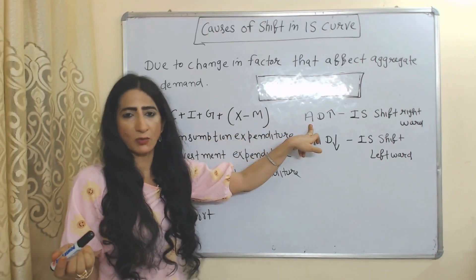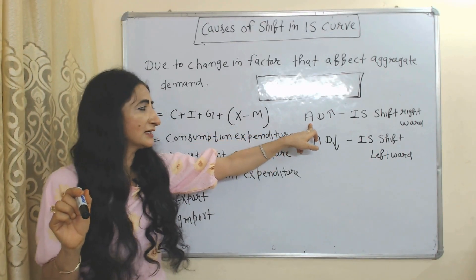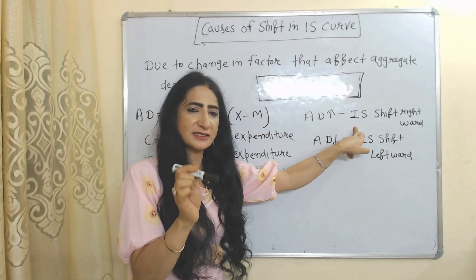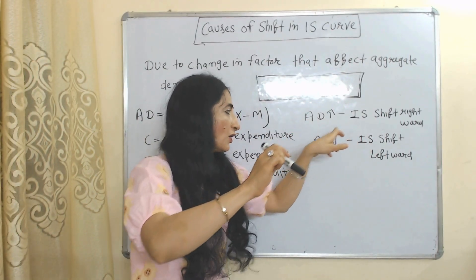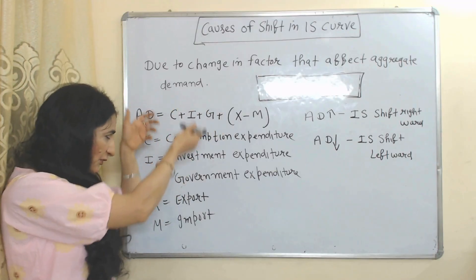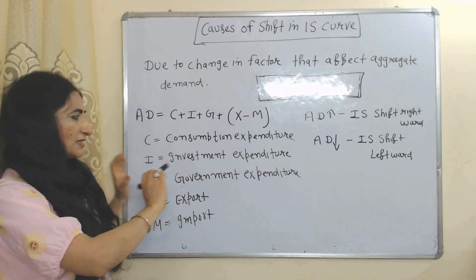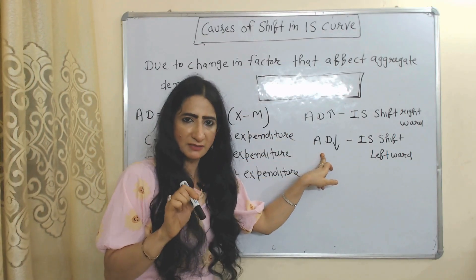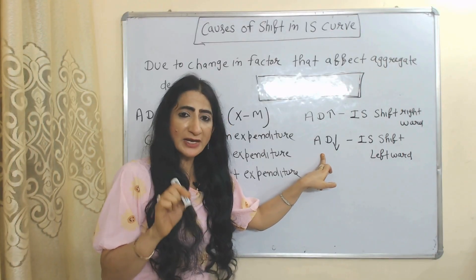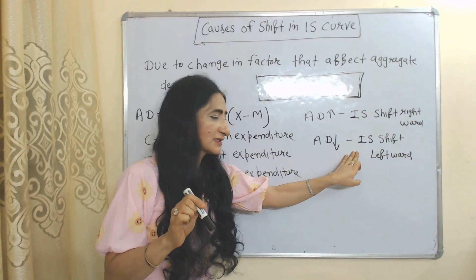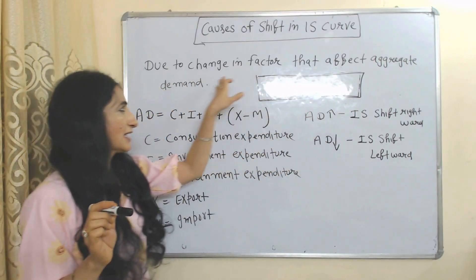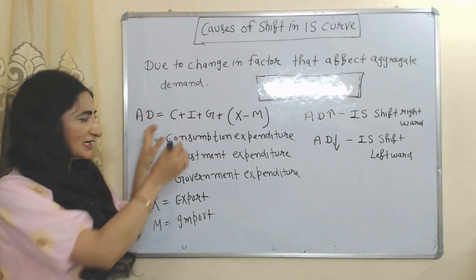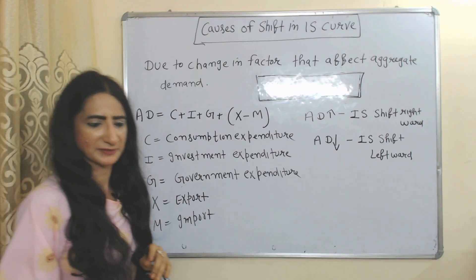If consumption expenditure increases, investment expenditure increases, government expenditure increases, or net exports increase, then aggregate demand will also increase and the IS curve will shift rightward. On the other hand, if there is a fall in consumption, investment, government expenditure, or net exports, aggregate demand falls and the IS curve shifts leftward.